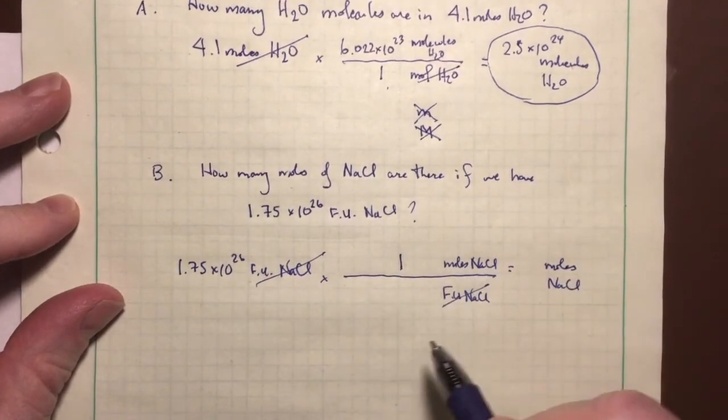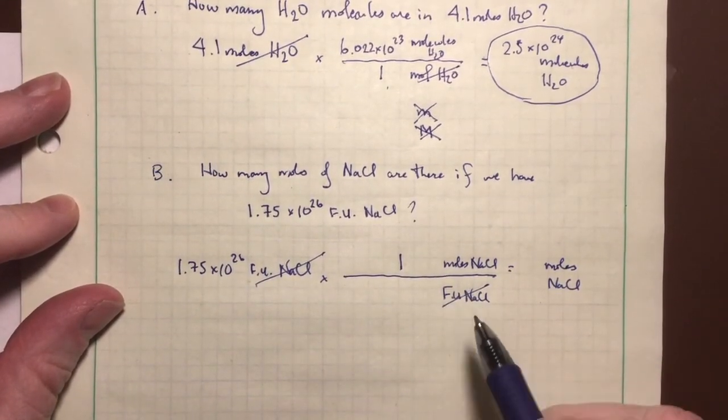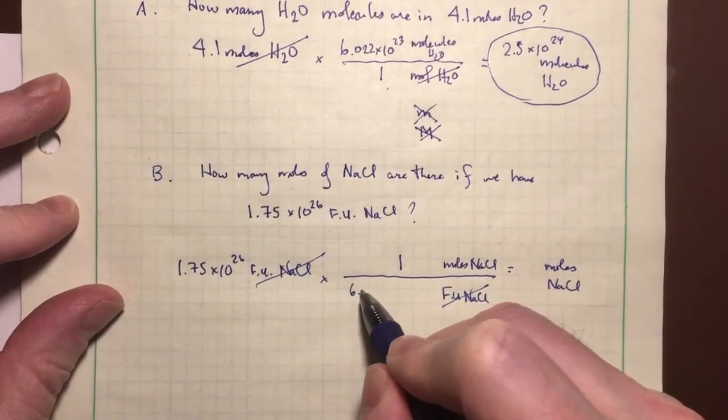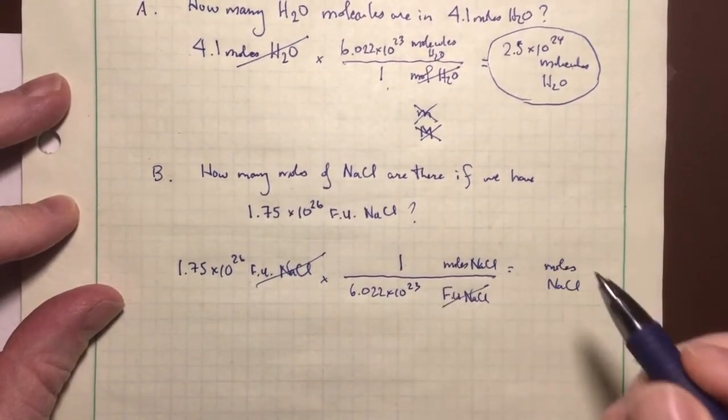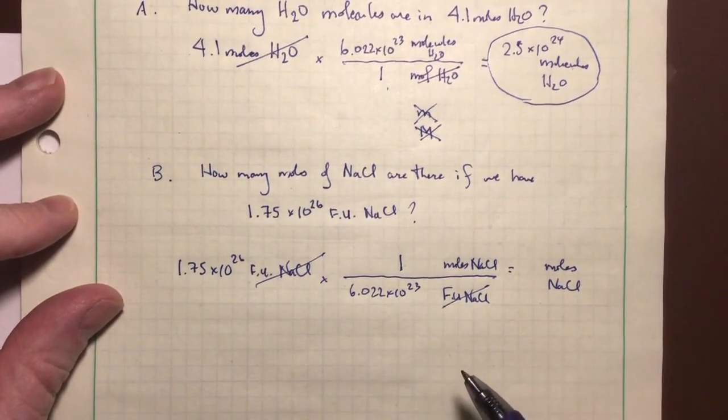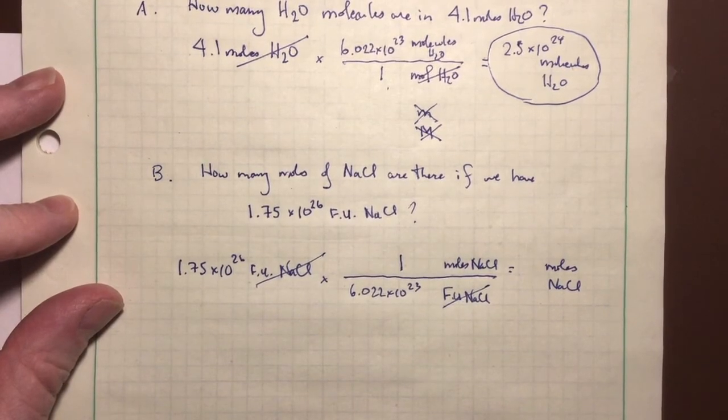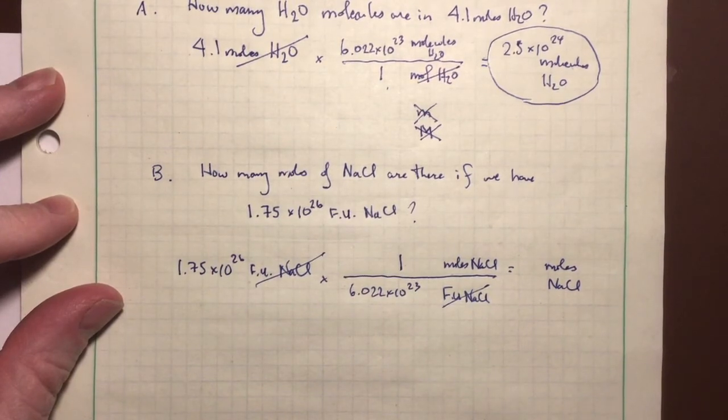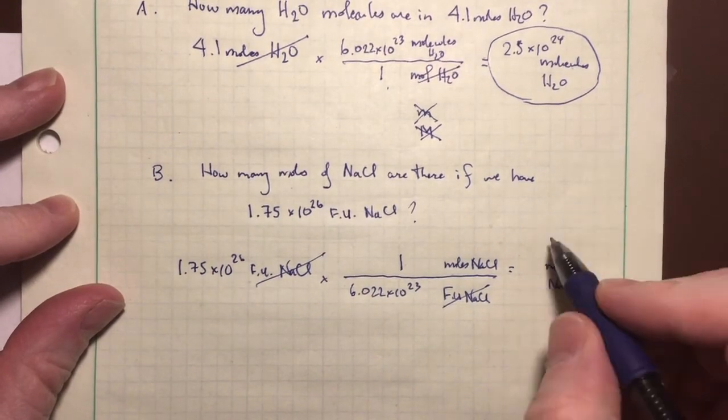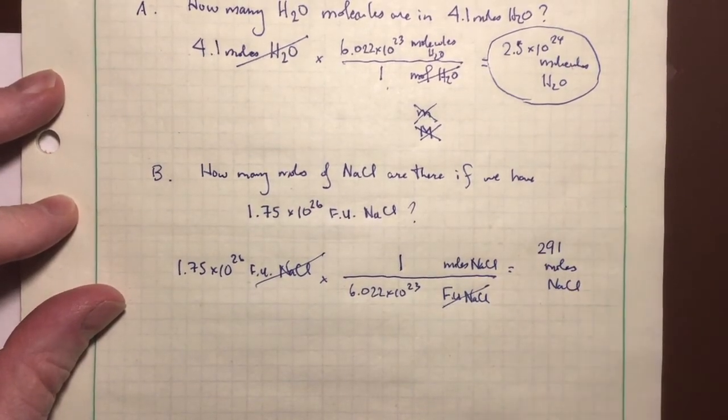Which numbers go where? Well, one mole is how many formula units, how many of these things are in a mole. It's going to have Avogadro's number. And now we have our numbers in the right place, and now it just relies upon us to be able to plug everything into our calculator correctly. So 1.75 times 10 to the 26th, and it's going to be divided by this number, divided by 6.022 to the 23rd. Three sig figs, four sig figs, I need three sig figs. So my answer will be rounded at 291, 291 moles of sodium chloride.